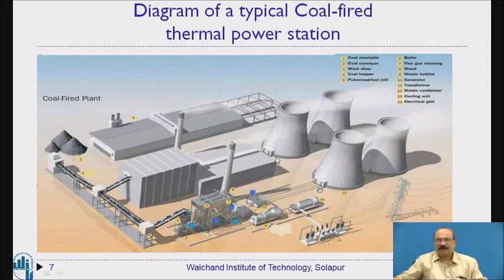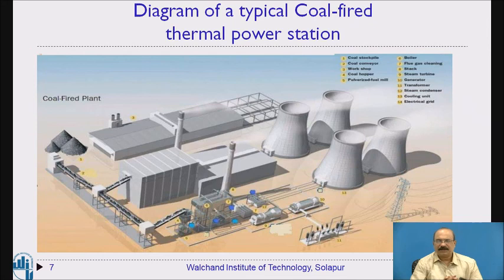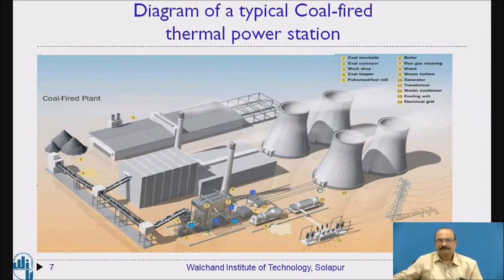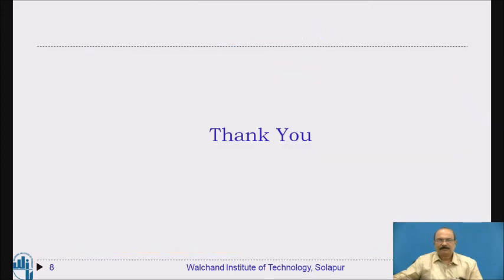Before concluding, let me mention the unit of capacity for a thermal power station. The capacity of any power station is represented in megawatts — for example, 300 megawatts, 450 megawatts, or 500 megawatts. This is the unit used to represent the electrical energy produced. Thank you.